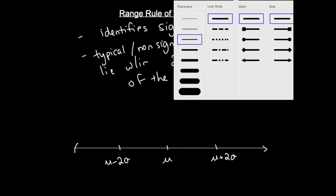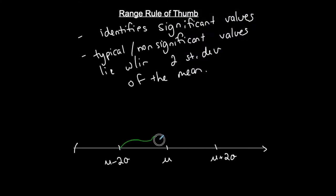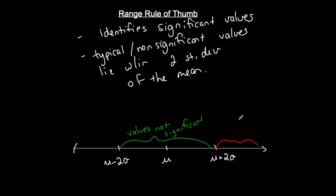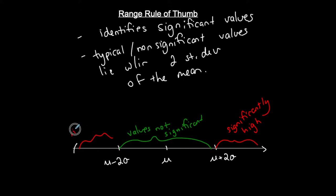What the range rule of thumb says is that any values that lie within two standard deviations are not significant values — they're typical. But if I go above two standard deviations of the mean, then we say we have significantly high values. And if I'm more than two standard deviations below the mean, then that value is considered significantly low.